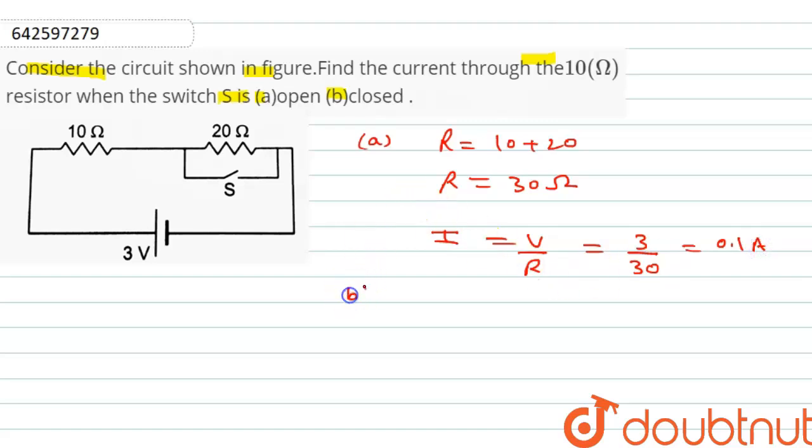In the second part, the switch is closed. This is the case of short circuiting. Current will go through this part and will not flow from this branch because it has resistance. Current goes through the branch in which it experiences minimum resistance.